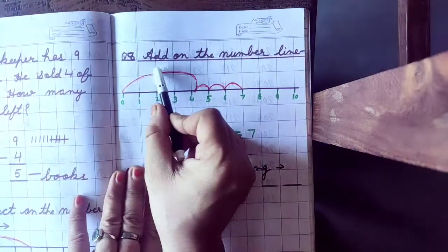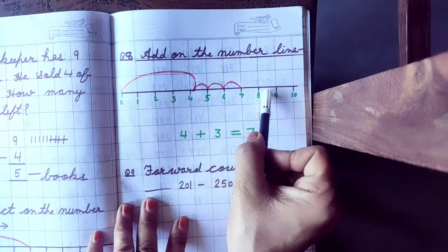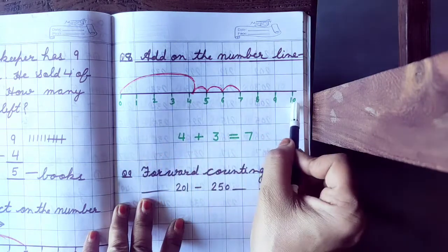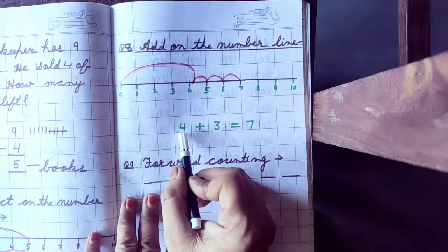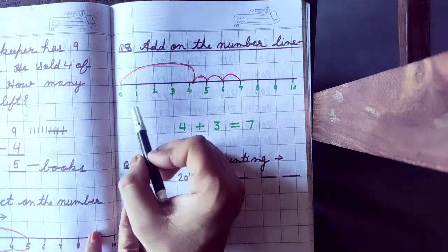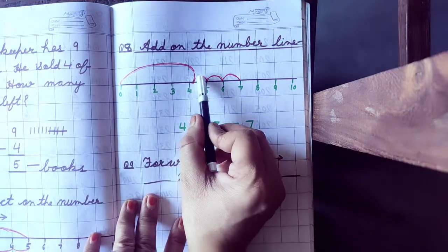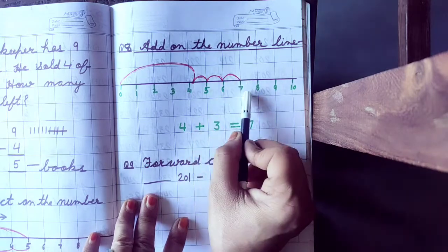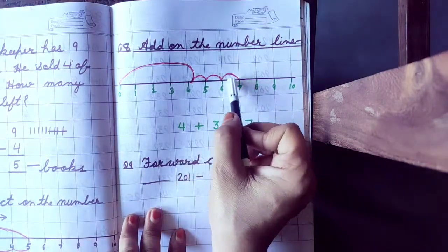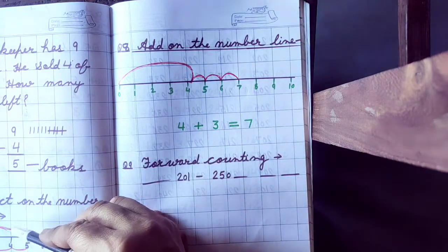Question number 8: add on the number line. In addition you have to go forward. Here are given the 0 to 10 numbers — you have to mark on that line. The sum given is 4 plus 3 equals 7. First go from 0 to 4, then count 3 numbers forward: 1, 2, 3 — the answer is 7. So in addition go forward, and in subtraction go backward.